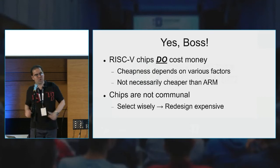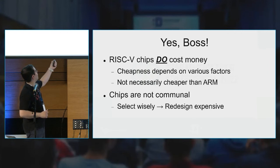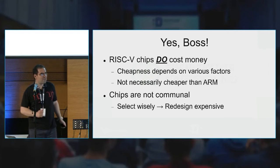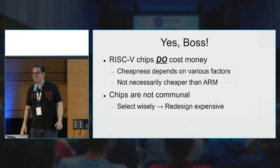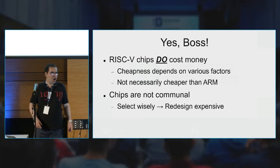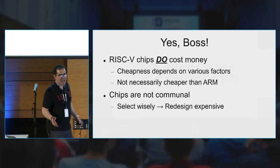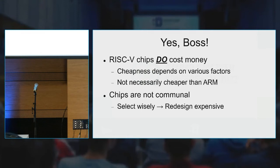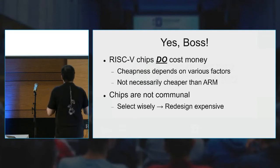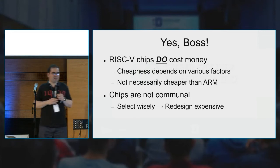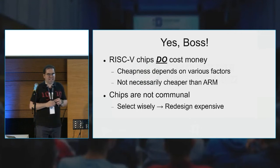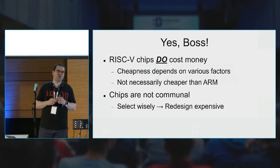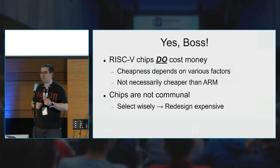And yes, this is mainly for the managers — quite regularly I get questions from people asking why the chips cost money since they are open source. Honestly, this is the most common question I get. And the interesting thing is: who of you thinks that a RISC-V chip, because there is no licensing fee, always has to be cheaper than an ARM chip?